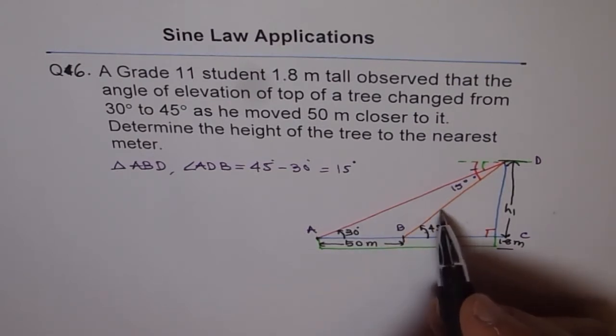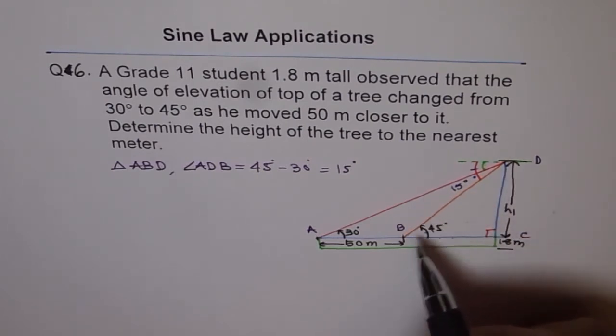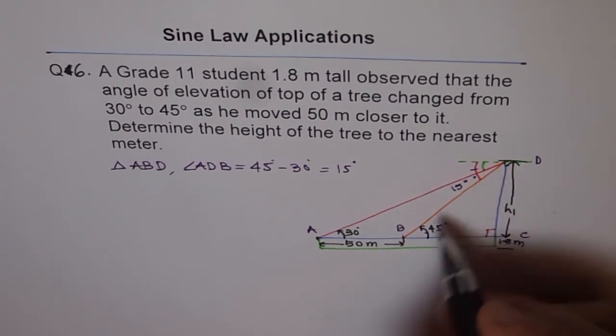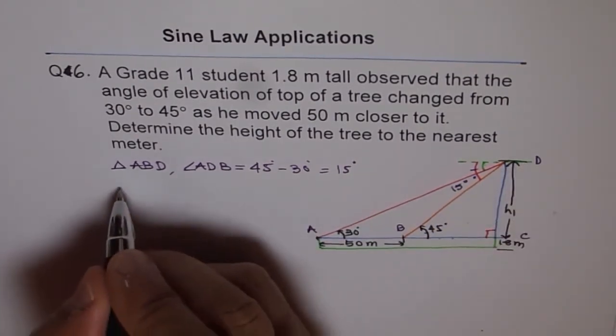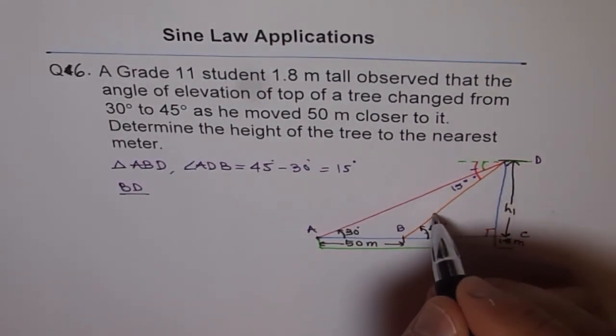Applying sine law, we'll try to find what BD is. We could find that also, but we didn't really calculate. This angle is known to us, 180 minus 45. So you can do either way. So let's figure out what BD is. In that case, we want to find BD. So we'll start with BD.